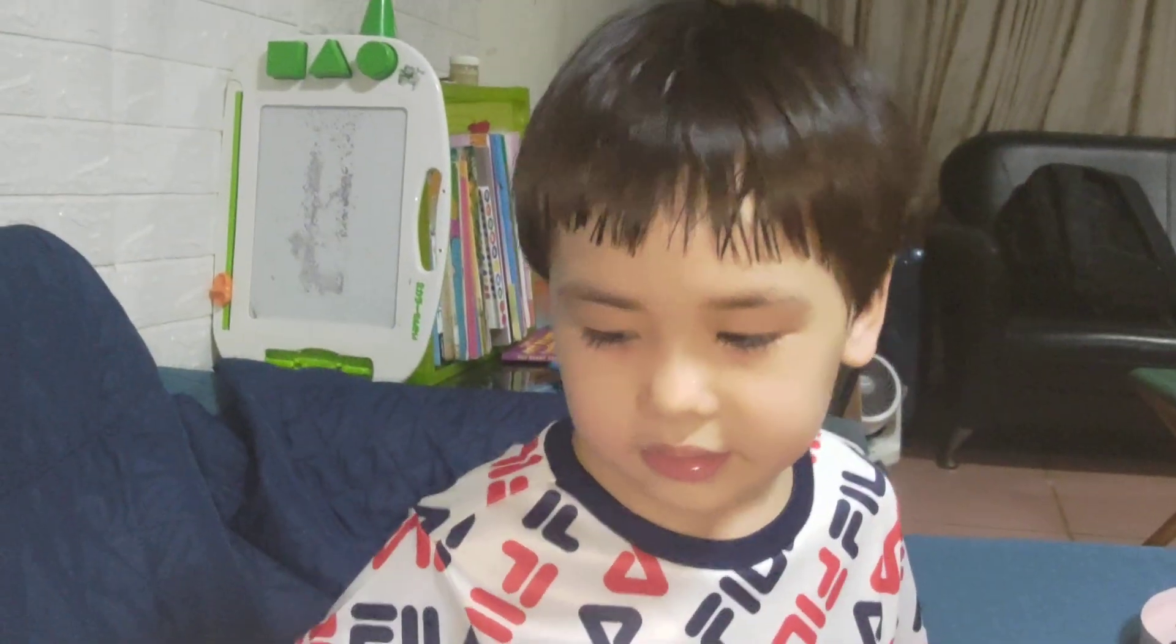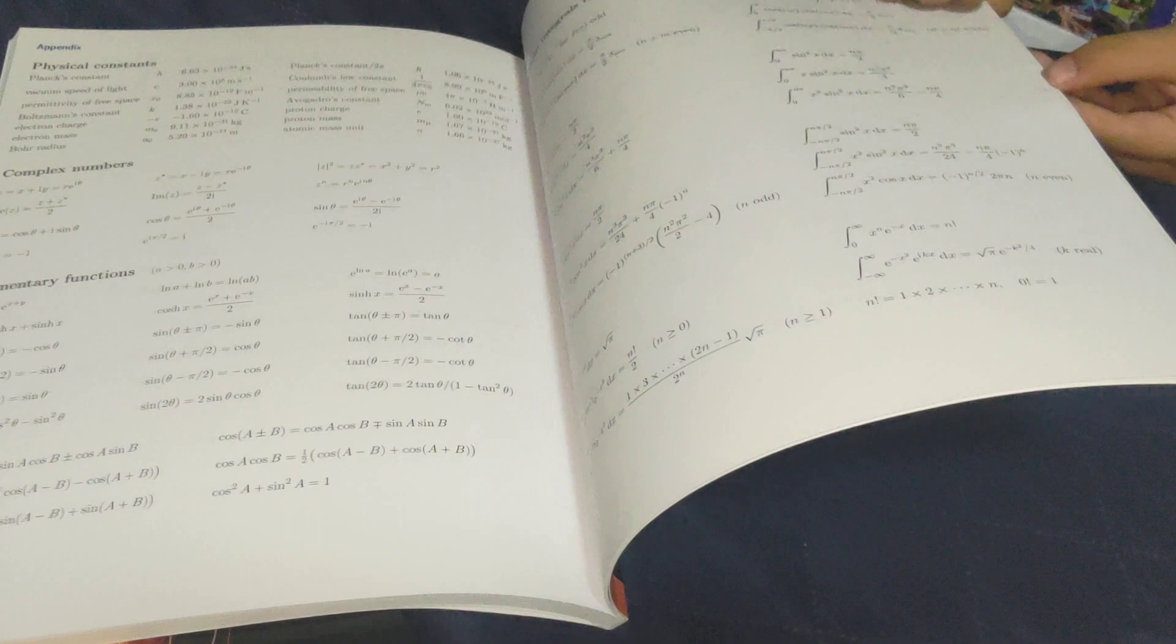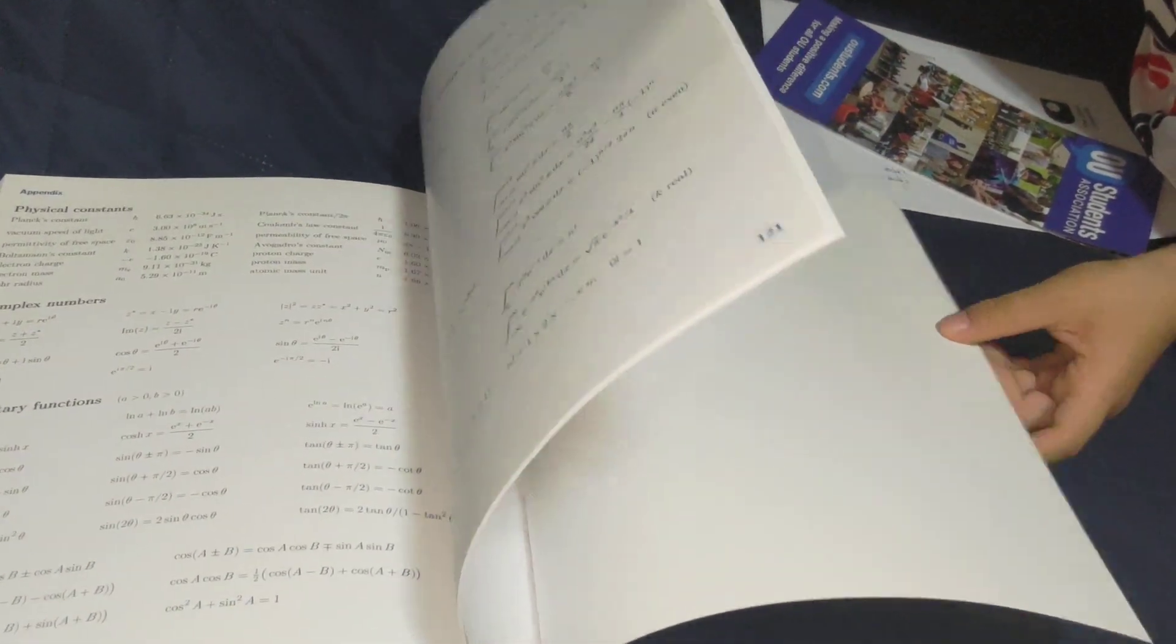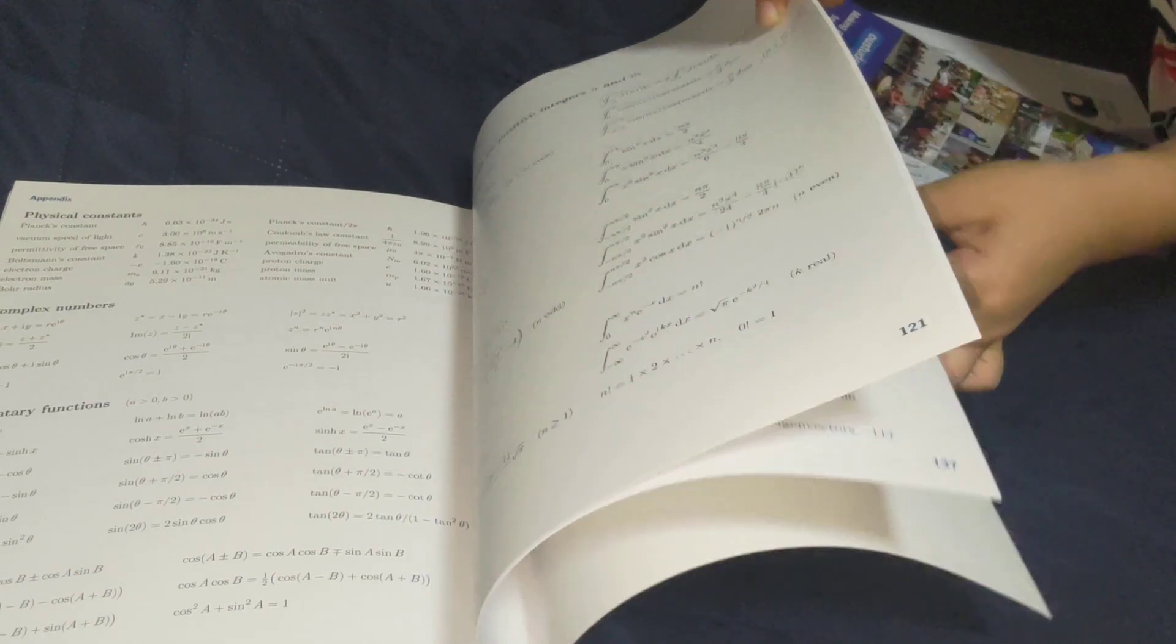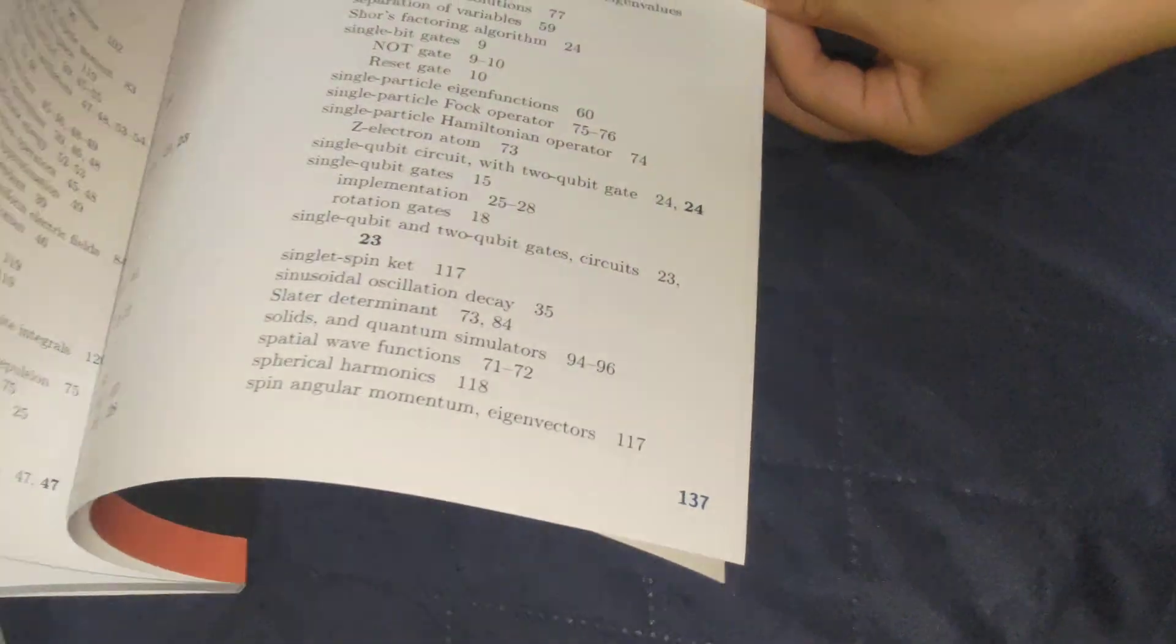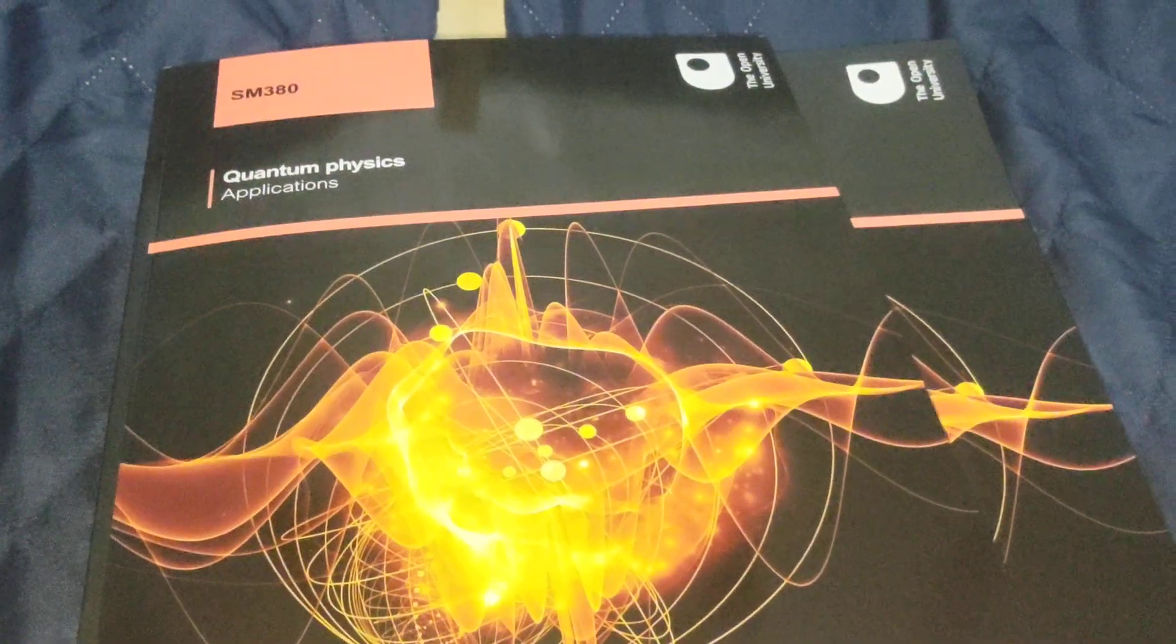Applications has fewer pages. How many pages does the applications book have? Did you check? Yeah, it's good. And how many pages did you say the first book has including the solutions at the end? 447. And applications, how many pages do we have? 137. Okay, so it's a quarter as big. All right cool, and that's SM380.